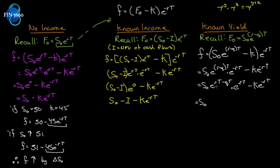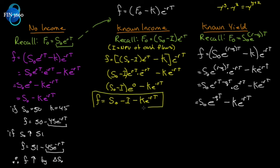Combining the exponents — positive rT and negative rT cancel, leaving negative qT — so we get S₀e^(-qT) minus Ke^(-rT). We're taking the spot price discounted back by the yield it provides, then subtracting the current value of the original futures price. So for known yield, the value of the contract is S₀e^(-qT) minus Ke^(-rT).